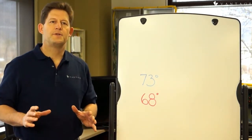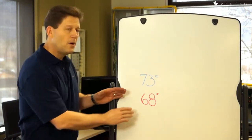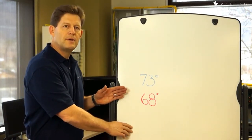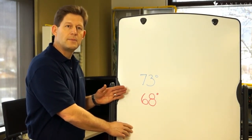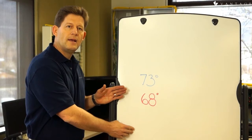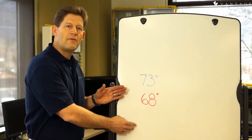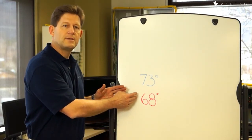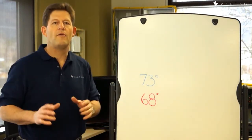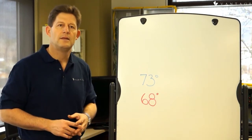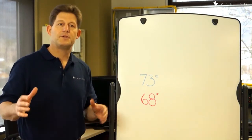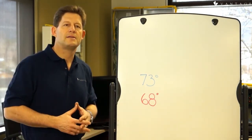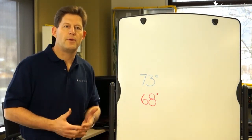If the measured temperature falls below the heat set point, the thermostat will signal the system to heat, and it will continue to call for heat until the temperature rises to the set point, at which point the call for heat ends, so that the temperature doesn't continue to rise above that desired set point temperature.